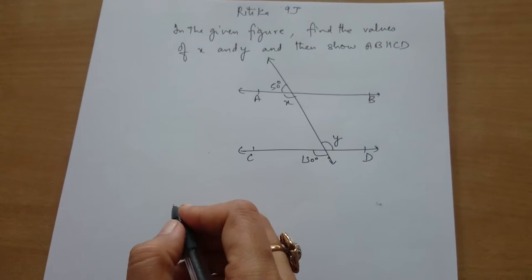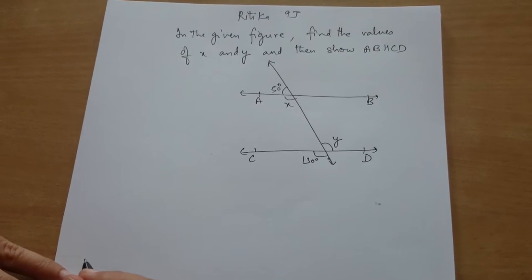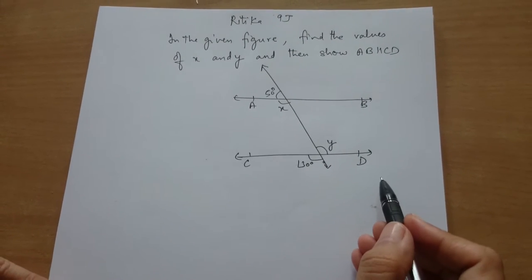Hrithika, question for you is, in the given figure, find the values of X and Y, and you have to show that AB is parallel to CD.